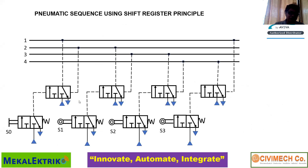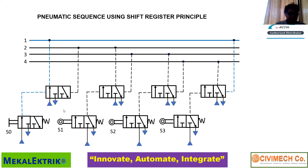S1 will reset this three two-way double air piloted valve. S2 will reset this one. S3 will reset this one. So if I press S0, air will go to 1 and it will reset the last step at S3. It means the only signal is coming from line 1 to activate your actuators.